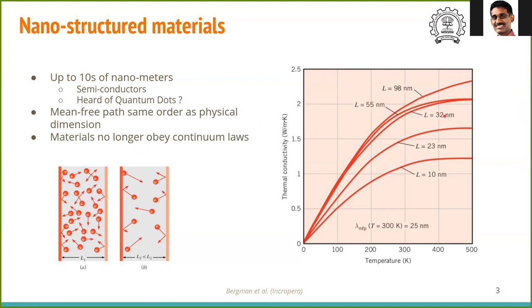When we come to smaller sizes — say 10 nanometers — the size of the material is roughly the same as the mean free path. When the mean free path becomes of the same order as the physical dimension, continuum laws no longer apply. The motion is no longer as random as in the bulk case, and there are many variations that effectively lead to a reduction in thermal conductivity.